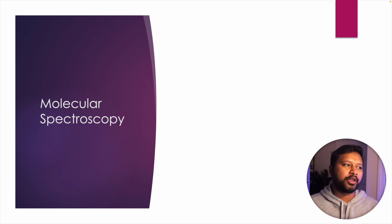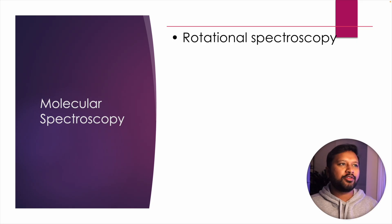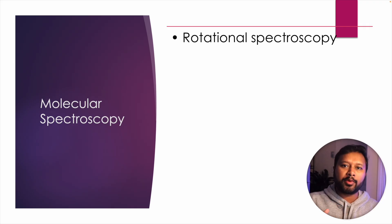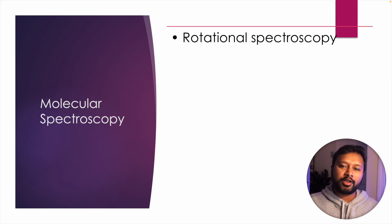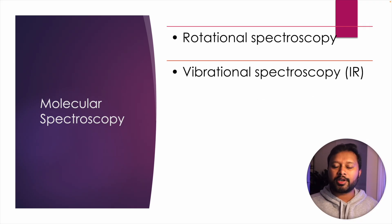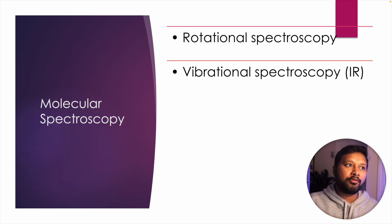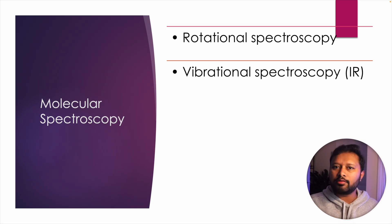Next is molecular spectroscopy, another big chapter. Start with rotational spectroscopy: the selection rule, calculating the probability distribution, the value of J_max, and how to find out energy levels and energy differences. Then comes vibrational spectroscopy — starting from the selection rule through calculating energy differences of different vibrational levels. Also cover overtones when studying vibrational spectroscopy: first overtone and second overtone.